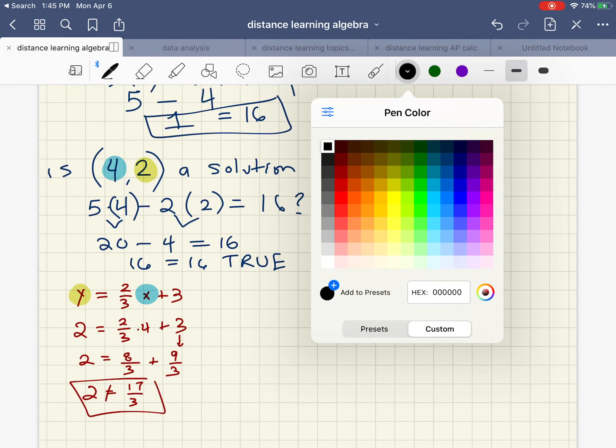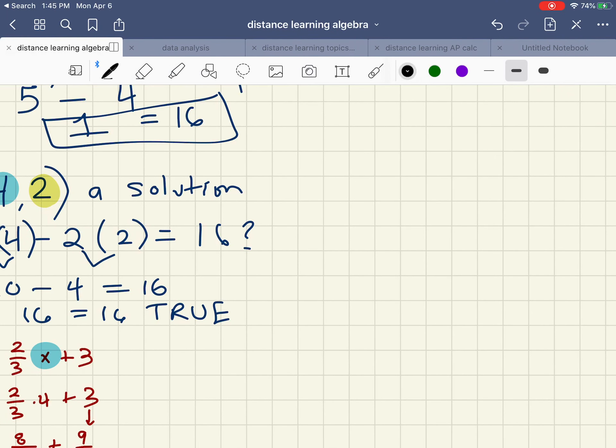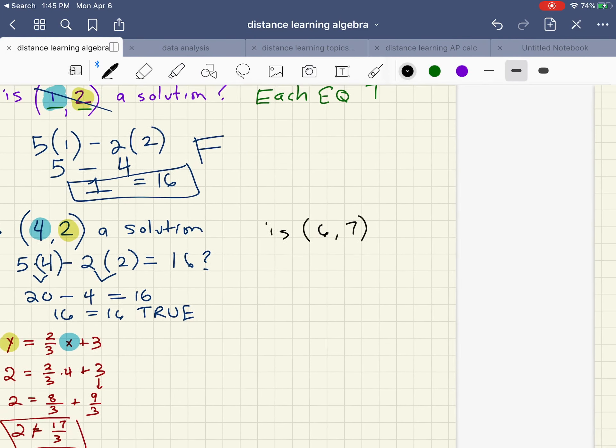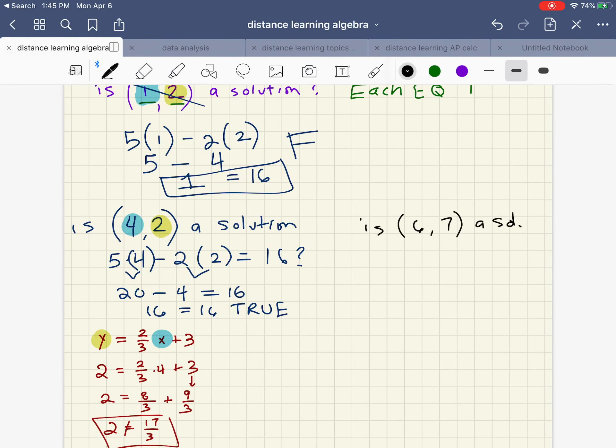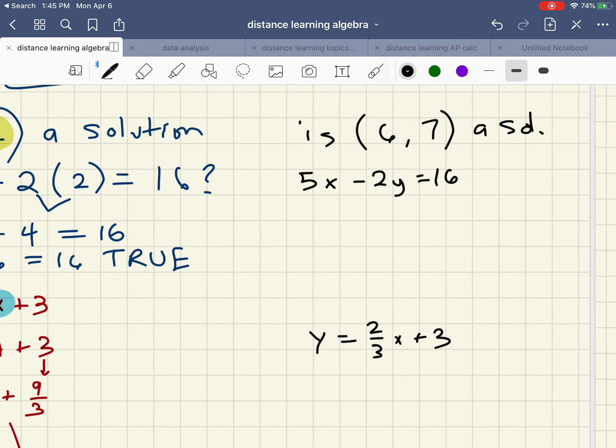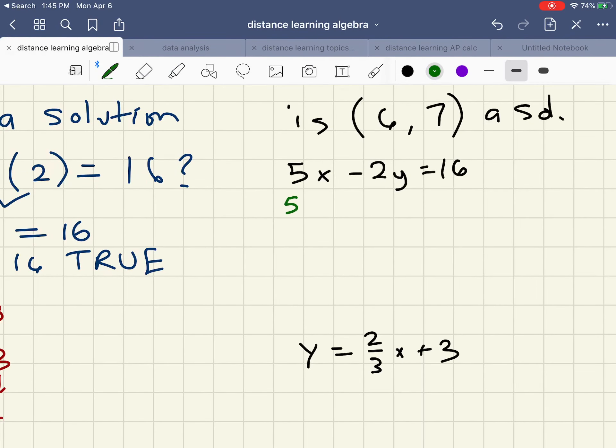Now it just so happens that I know the solution. So let's try one more point. Is (6,7) a solution? So we have 5x - 2y = 16 and later on y = 2/3x + 3. I think this is a solution, I thought it was, but let's check it out. So 5 times 6 minus 2 times 7 equals 16. That's 30, that's 14, 30 minus 14 is 16. That is true.